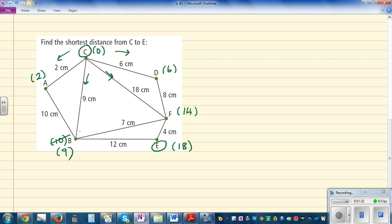So 0 plus 9 is 9, and 9 plus 12 is 21. That is not better. I'm not going to go that way. What if you go this way? 9 plus 7 is 16. That is again greater.